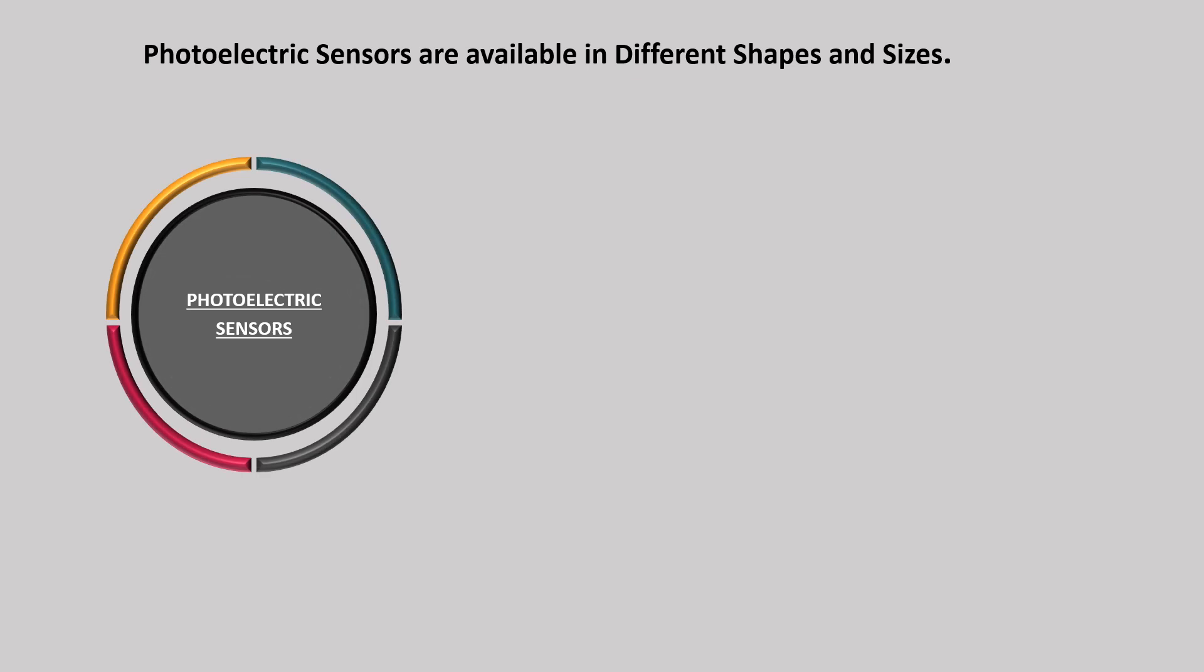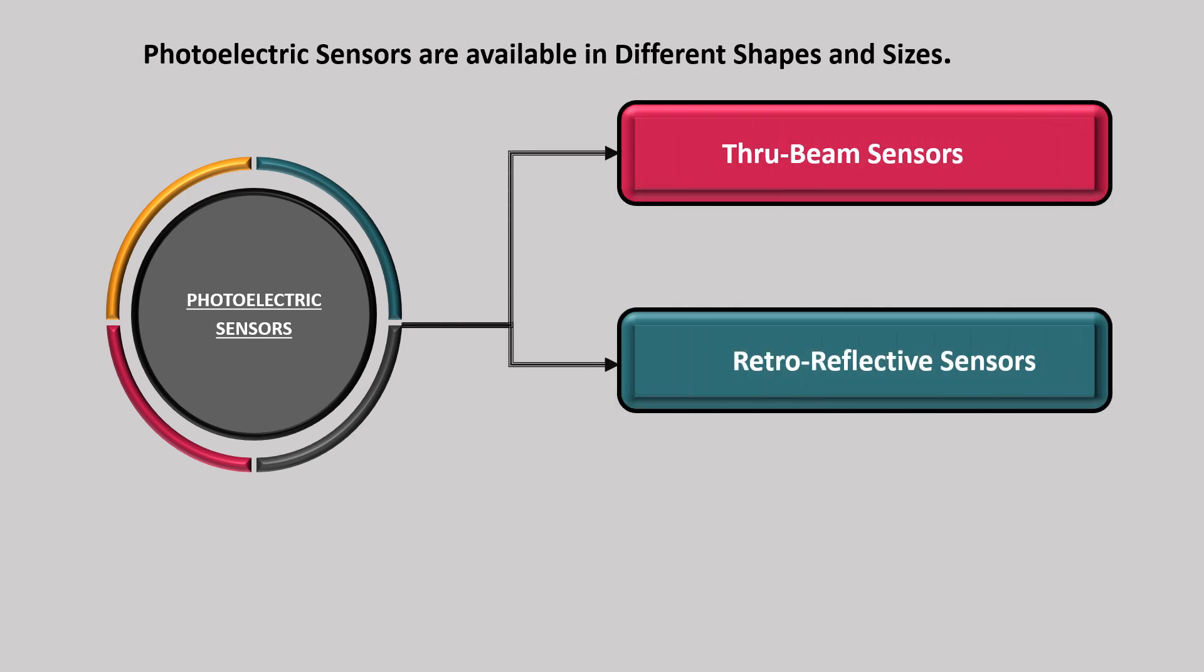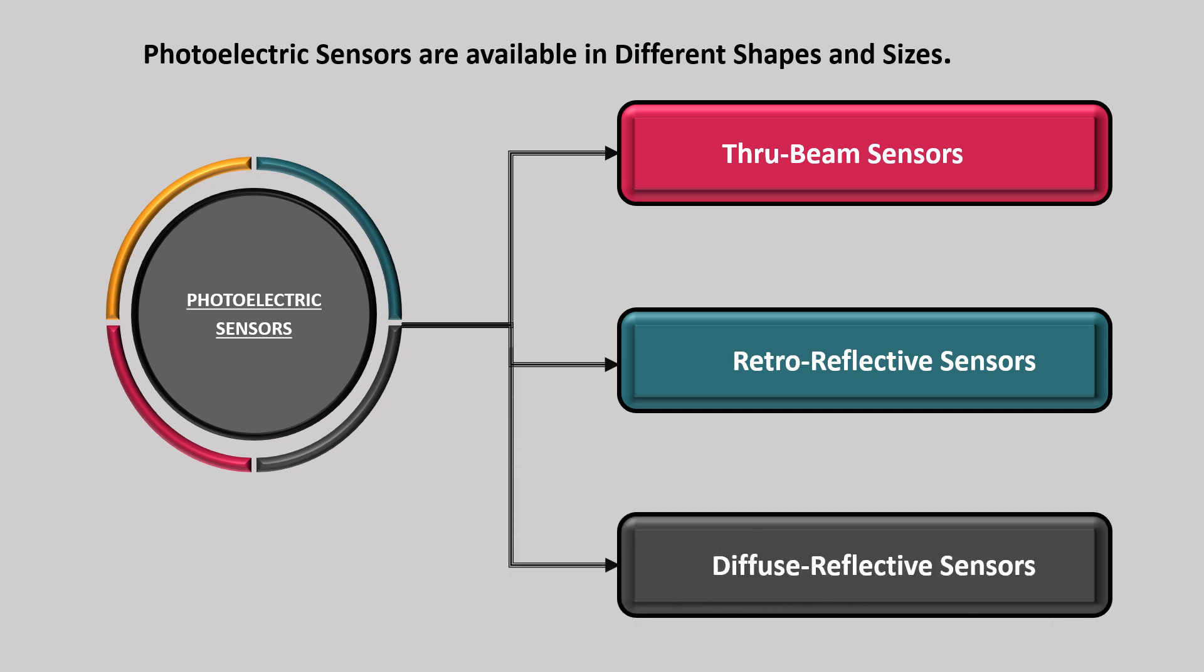Photoelectric sensors are available in different shapes and sizes. This makes these sensors suitable in many industrial applications. Photoelectric sensors are classified into three main groups on the basis of sensing method. They are through beam sensors, retro reflective sensors, and diffuse reflective sensors. Each model offers varying light emission methods though they are all highly efficient when it comes to distance detection. Now, let's discuss each sensor in detail.